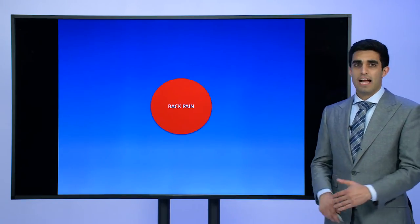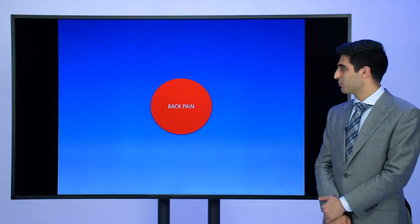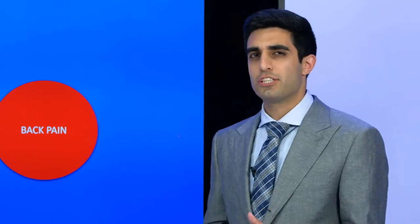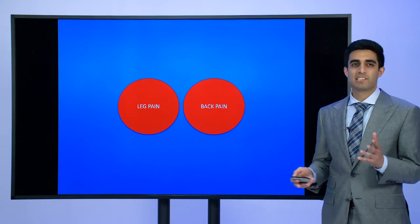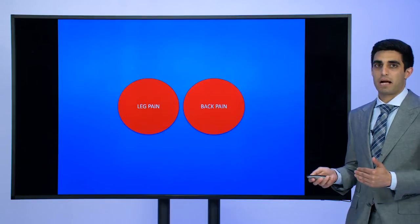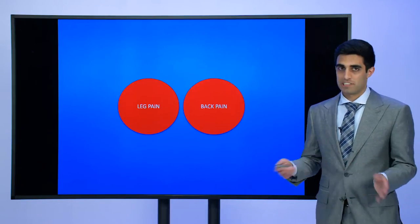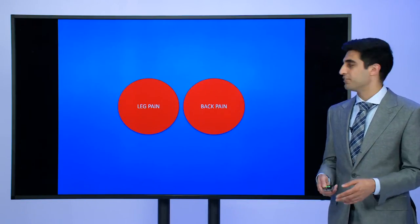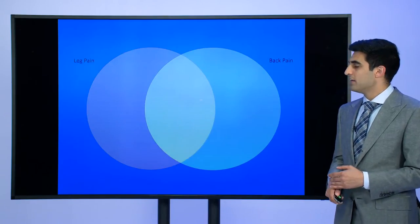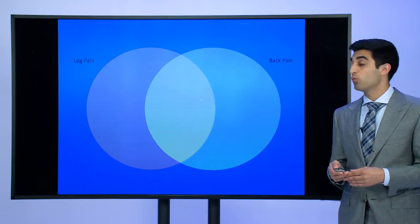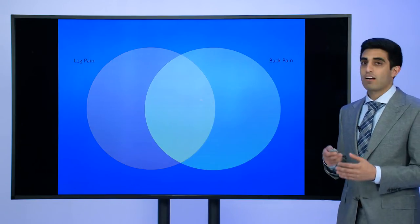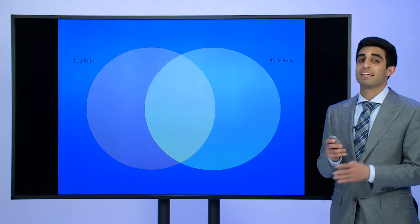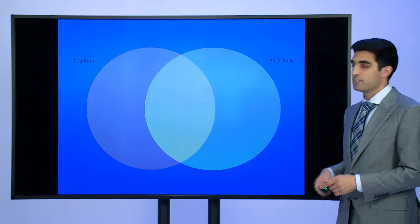How do we think about lumbar spine conditions? There are patients who have just back pain, there are patients who may have just leg pain, and then the majority of our patients have some sort of breakdown between leg pain and back pain — whether it be 90% leg pain and 10% back, or a 50-50 split. Common conditions can cause leg pain by itself, leg pain and back pain, as well as just back pain.